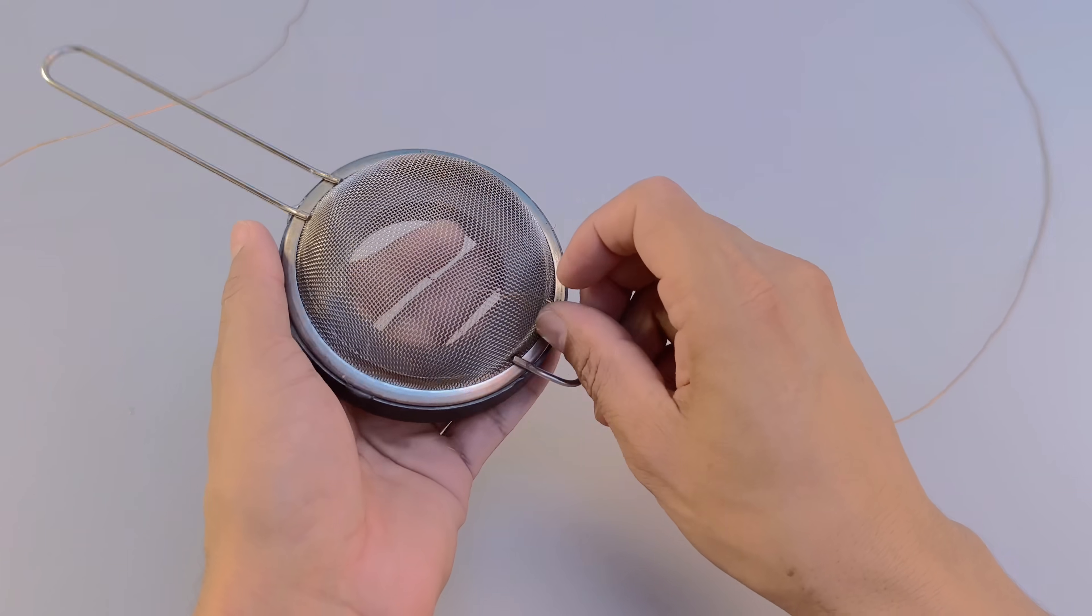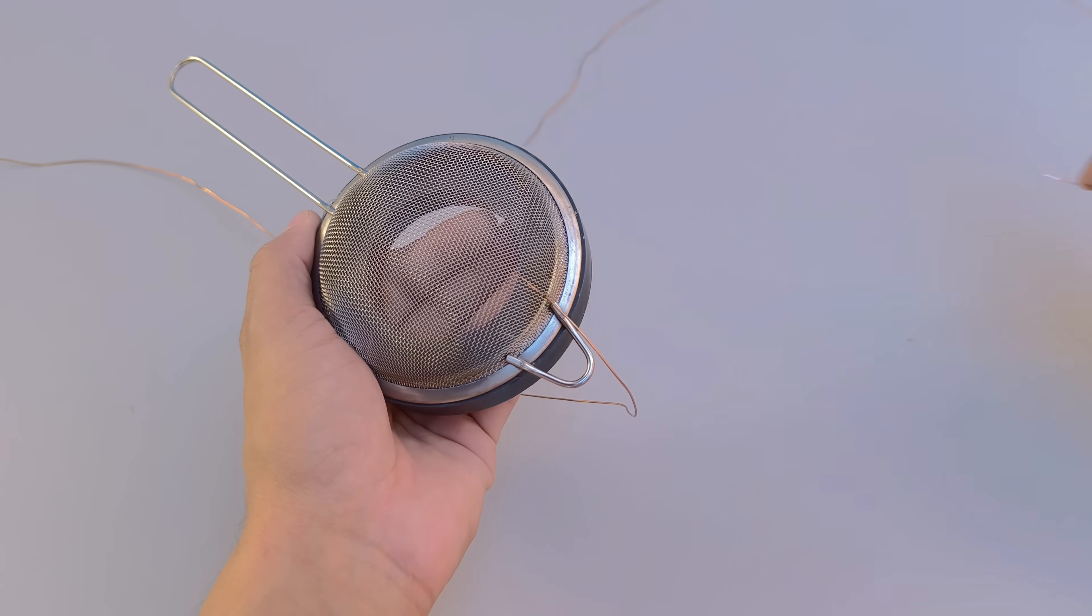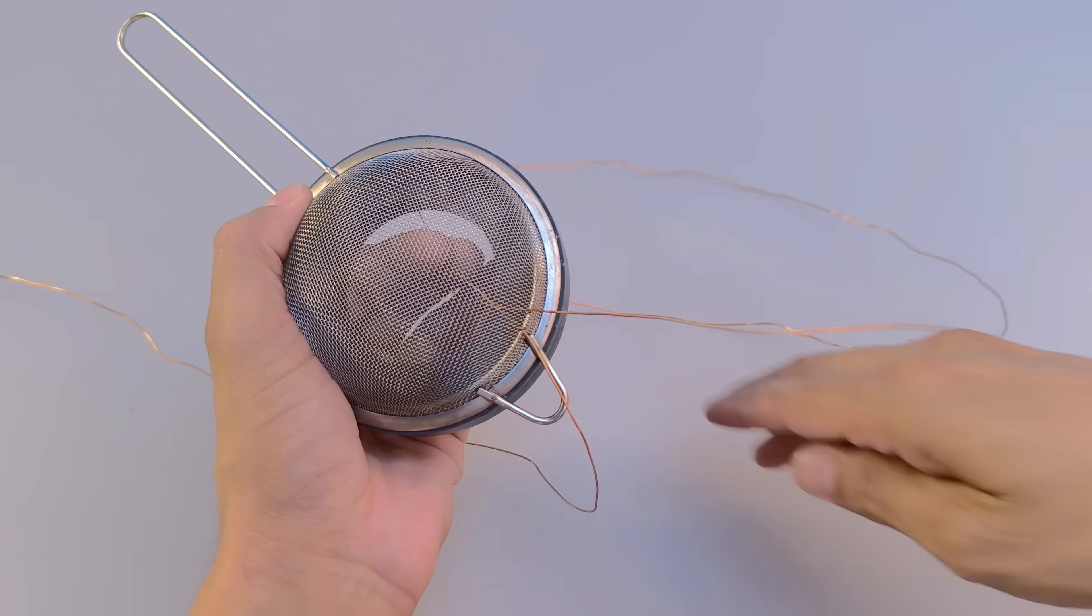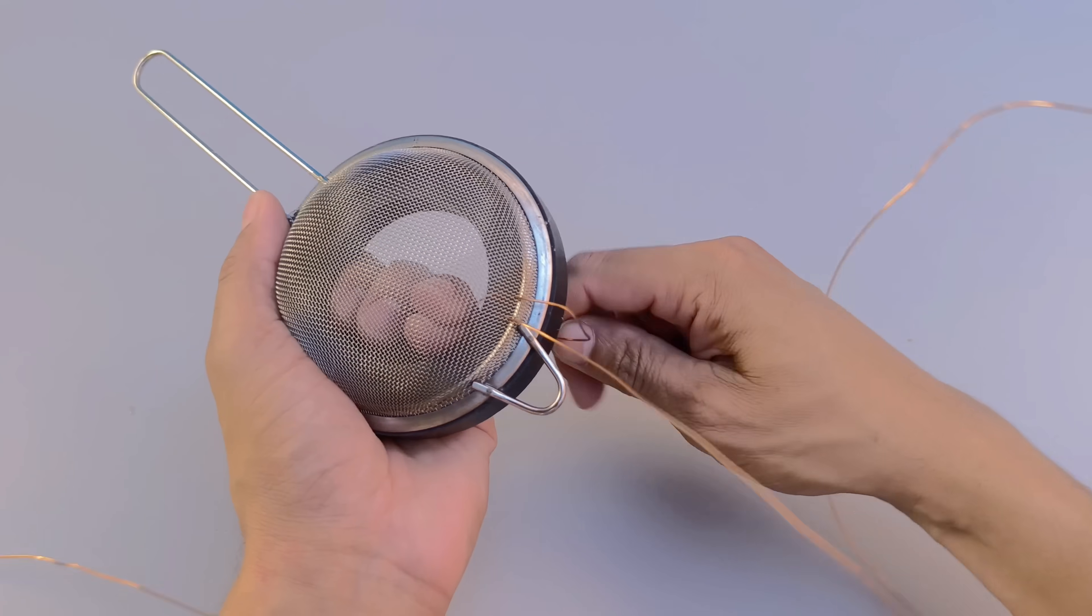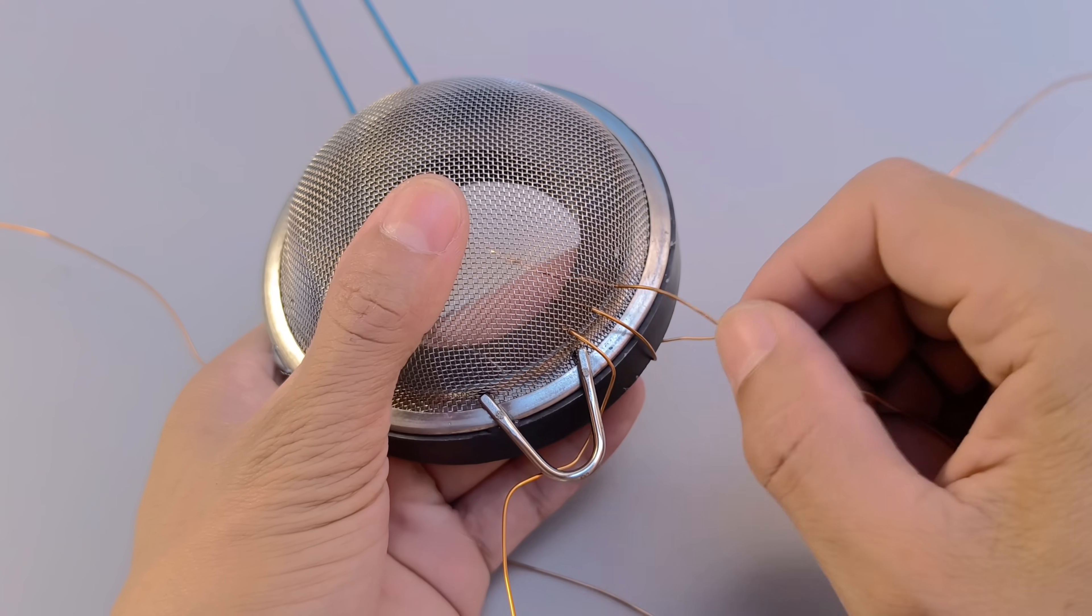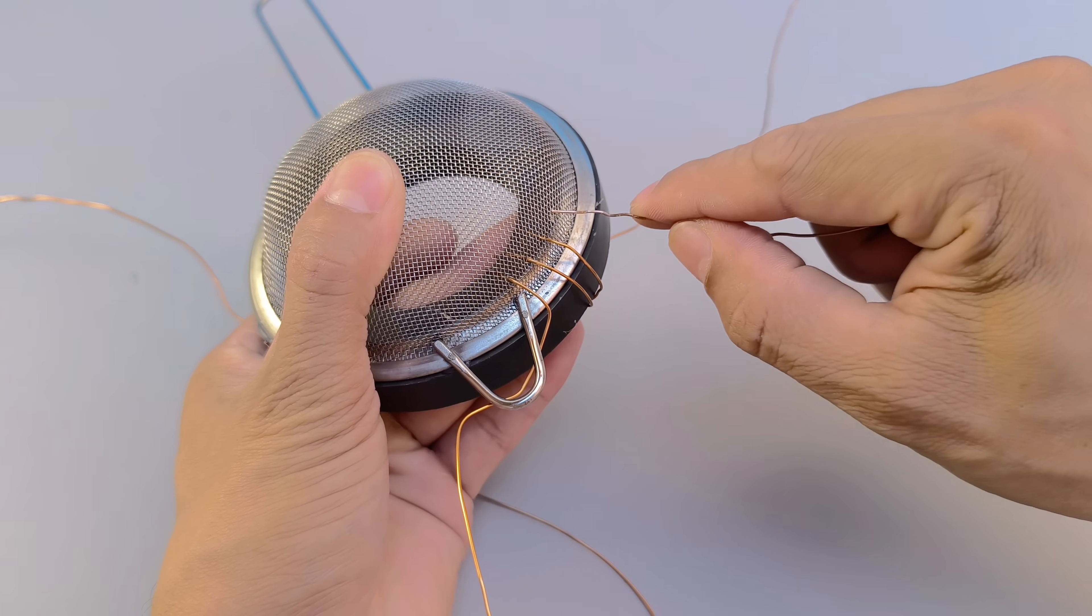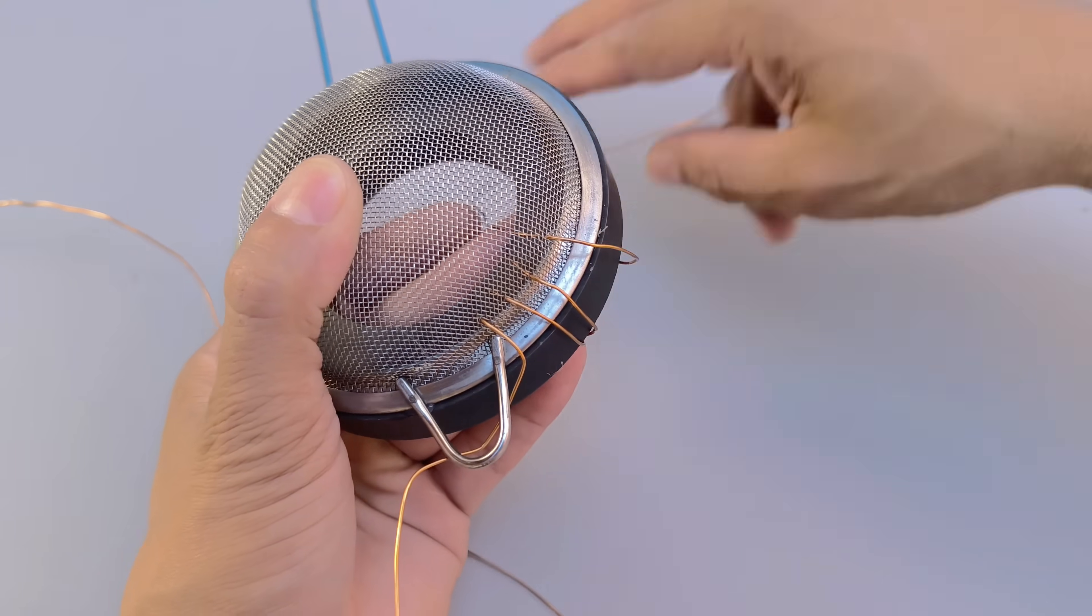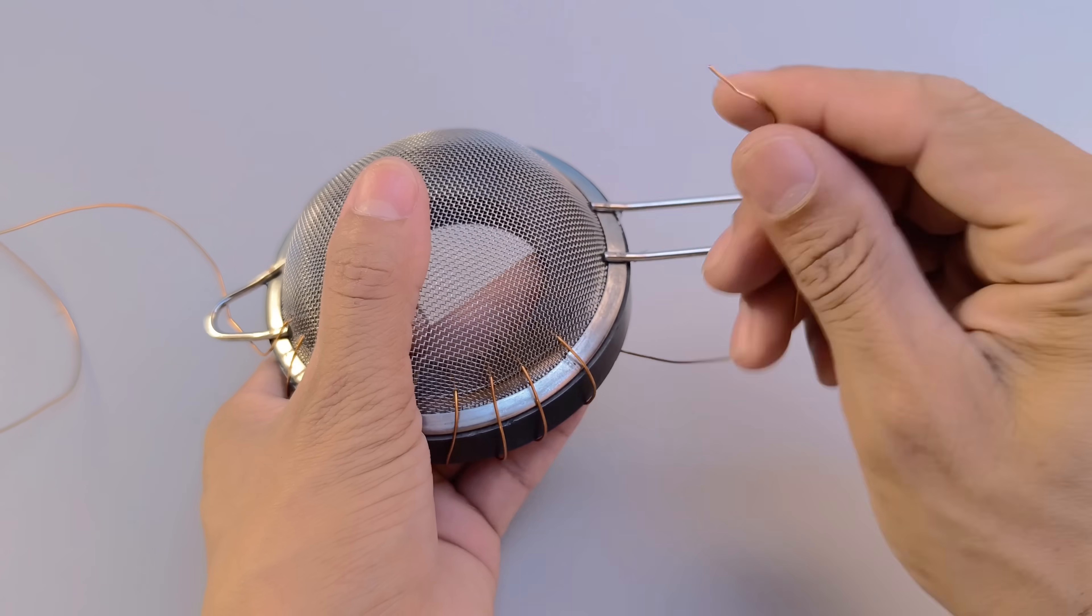Next, take the end of the enameled copper wire and carefully start wrapping it around the sieve and magnet. The procedure is very similar to tying something together. Pass the wire precisely through the gaps in the sieve, making firm turns, but without applying excessive force so as not to deform the wire or damage the structure. It is essential to maintain a very uniform distribution of the turns, ensuring that the entire assembly is aligned and well-organized. Always wrap both the metal ring of the sieve and the magnet.